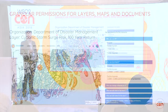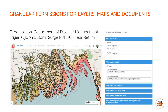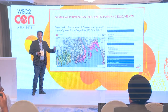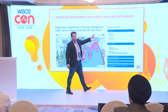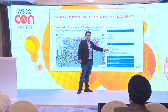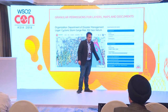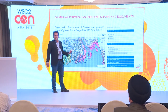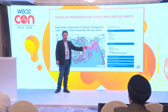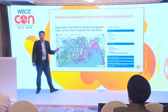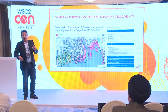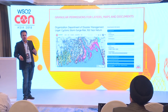For example, one dataset is the cyclone storm surge risk for a 100-year return period — it tells us which parts of Bangladesh would be affected if a cyclone hits within 100 years. The Department of Disaster Management developed this data, and they can control who can view it, who can download it, who can manage the metadata, and who can change the map styling. These permissions are controlled by the data uploader, not the platform owner — that is a very fundamental difference.